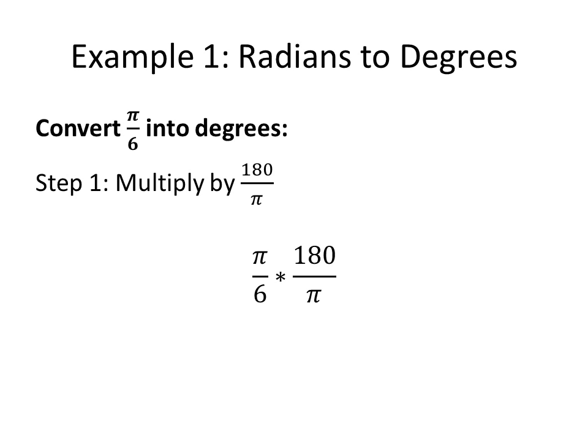In our first example, we're going to be converting from radians to degrees. The question asks to convert pi over 6 into degrees. Your first step is to multiply pi divided by 6 by 180 over pi, which is what we have right here on the screen. So you get pi divided by 6 times 180 divided by pi.